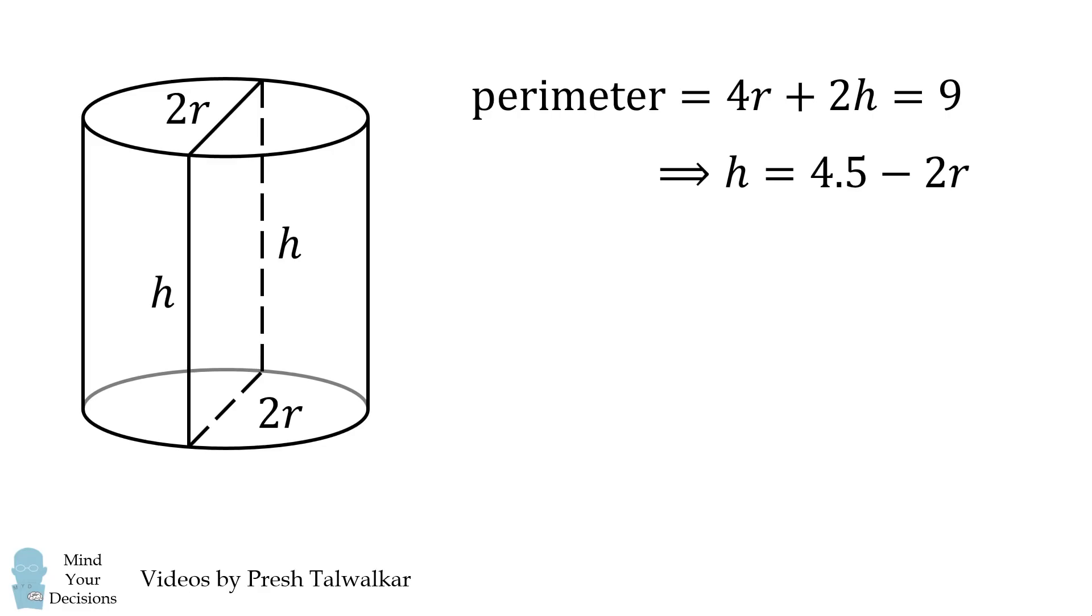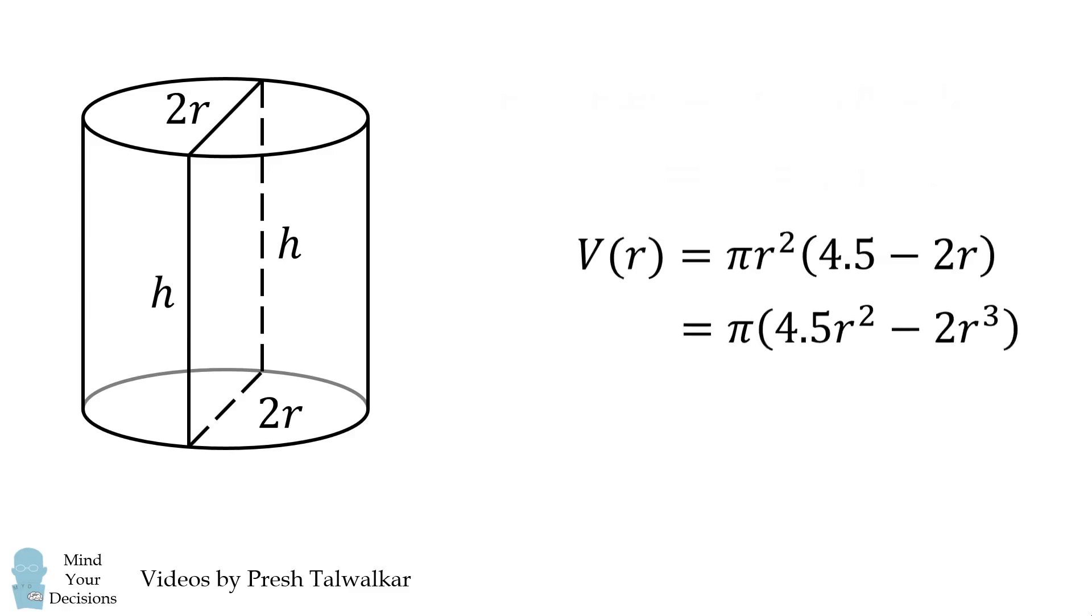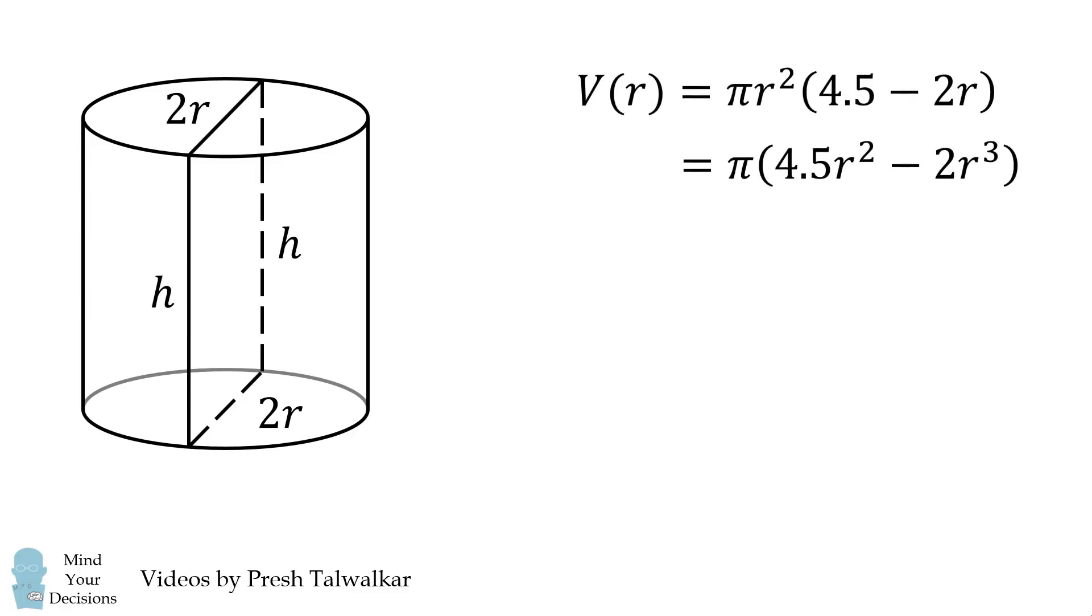Now, the volume of a cylinder is equal to π r² h. We can rewrite this in terms of r if we substitute for the value of h. We then simplify this, and now we need to solve for the maximum volume.